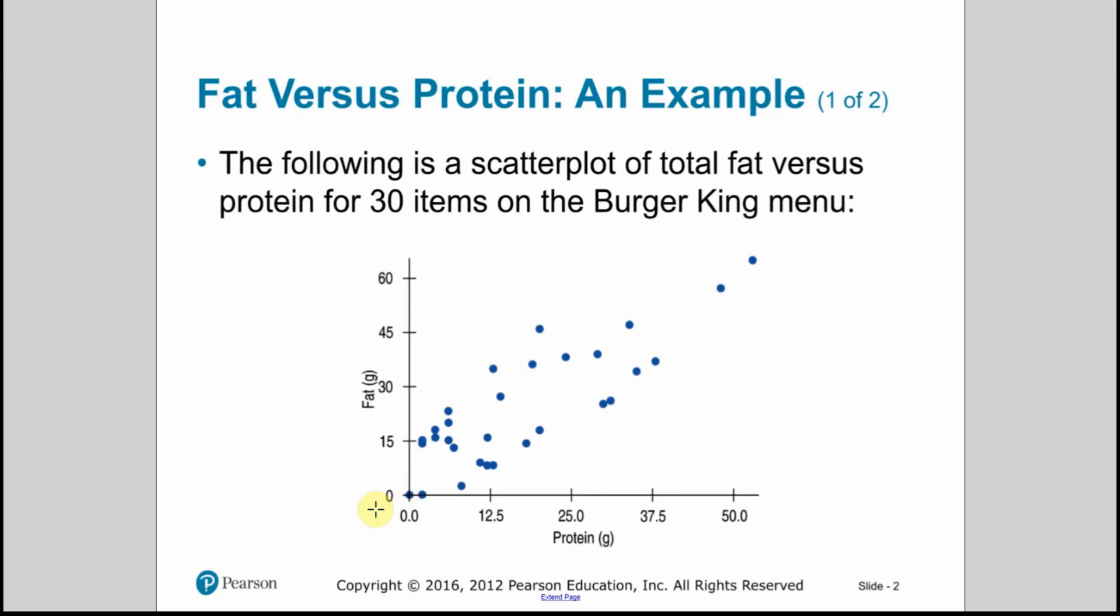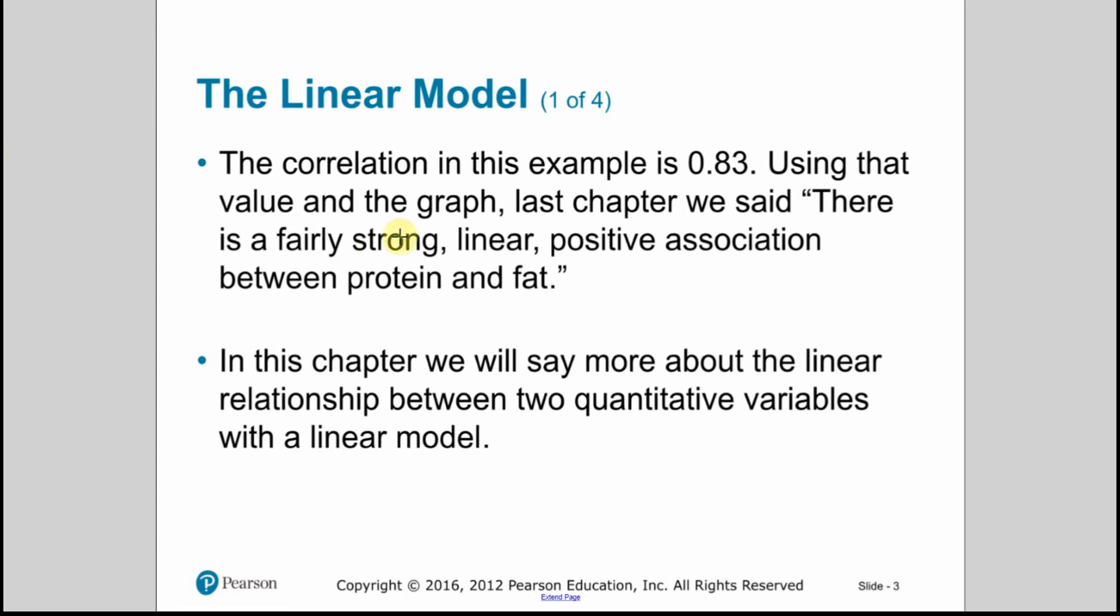It's fairly strong, maybe moderate. It's a positive direction. If I do a line of best fit, maybe it looks something like that. So roughly half the points are above it, half the points are below. It kind of splits the middle. So we're going to use that idea to talk about residuals. So the correlation of this one we looked at was 0.83. That would be considered strong, linear, positive association.